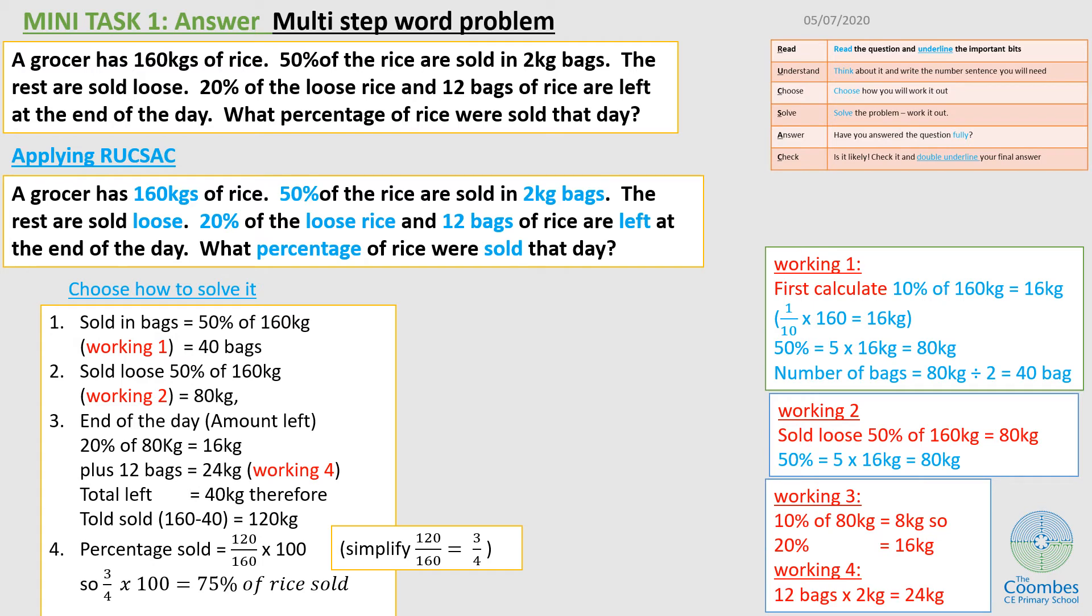So these are the important bits to underline. Now, if I think about it, then I can write number sentences to what I have underlined. I know from the question that the amount sold in bags is 50%. That's 50% of 160 kg.